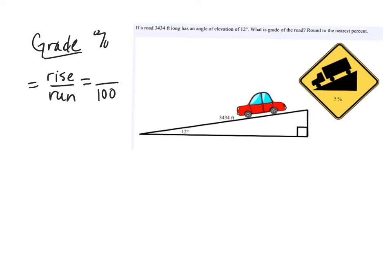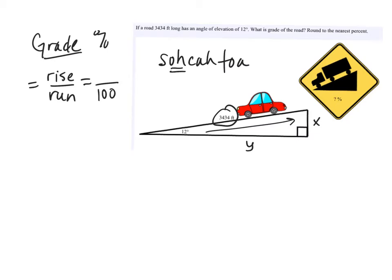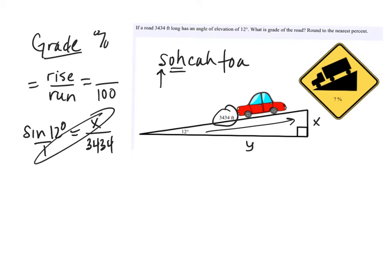To find the grade we need the rise and the run. I'll call the rise X and the run Y. X is the opposite side, and we have the hypotenuse: 3,434. Using SOH-CAH-TOA, opposite over hypotenuse is sine, so sine of 12° equals X over 3,434. Cross-multiplying: X equals 3,434 times sine of 12°.